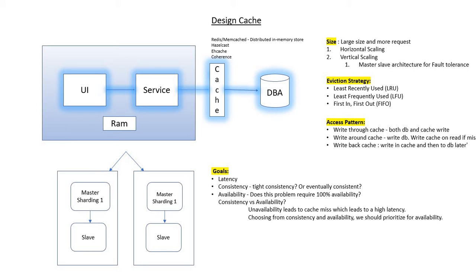In today's session we'll discuss something related to cache: why do we need a cache, and what are the different parameters we need to think about when we want to design a cache. Let's say I have a legacy application where I have a UI and my service running on one server, and a database running on another server. Whenever the UI wants something, it asks the service, and the service needs to go to the database, which responds back with the data.